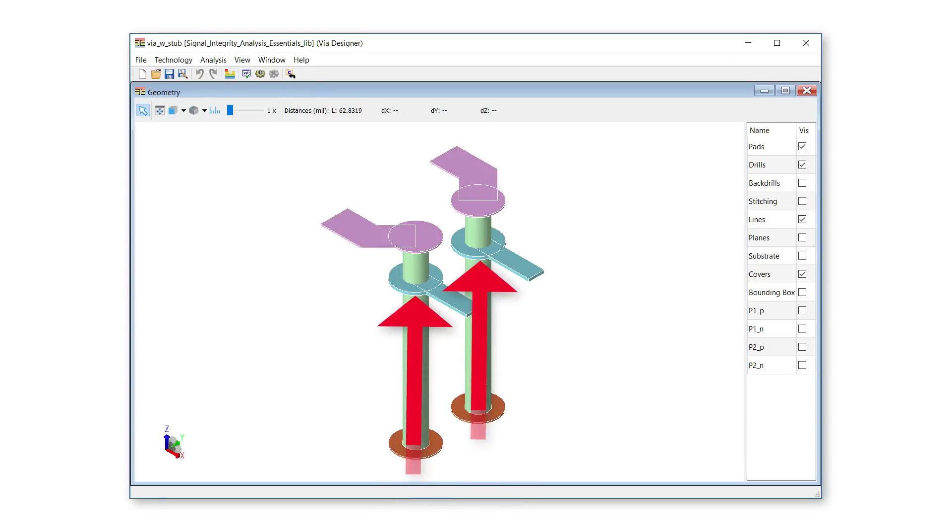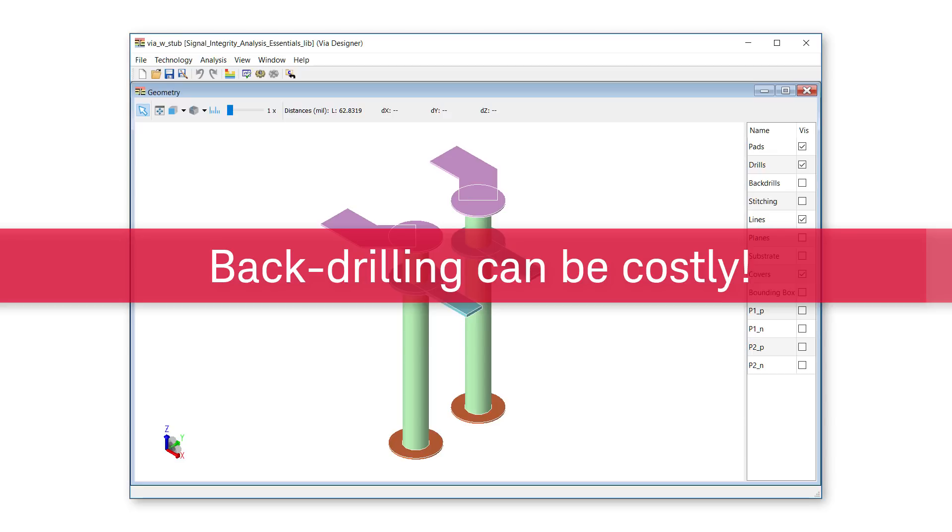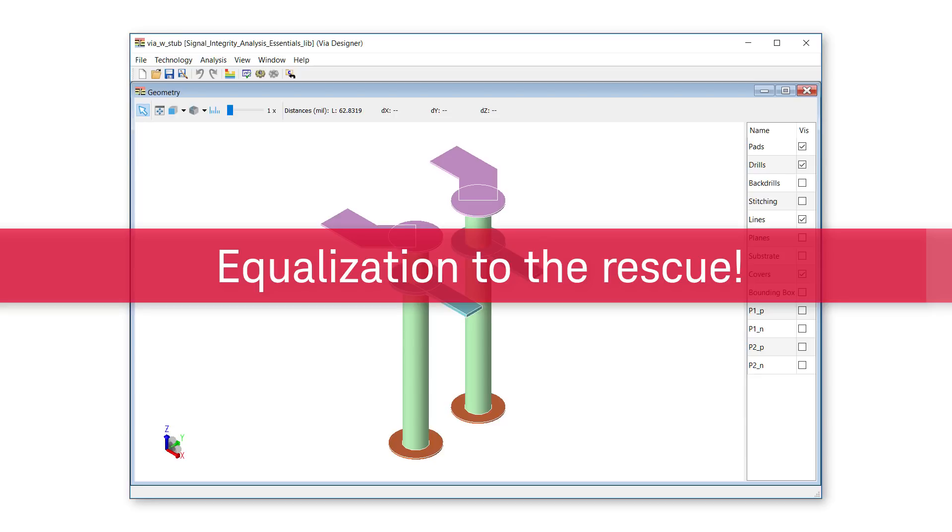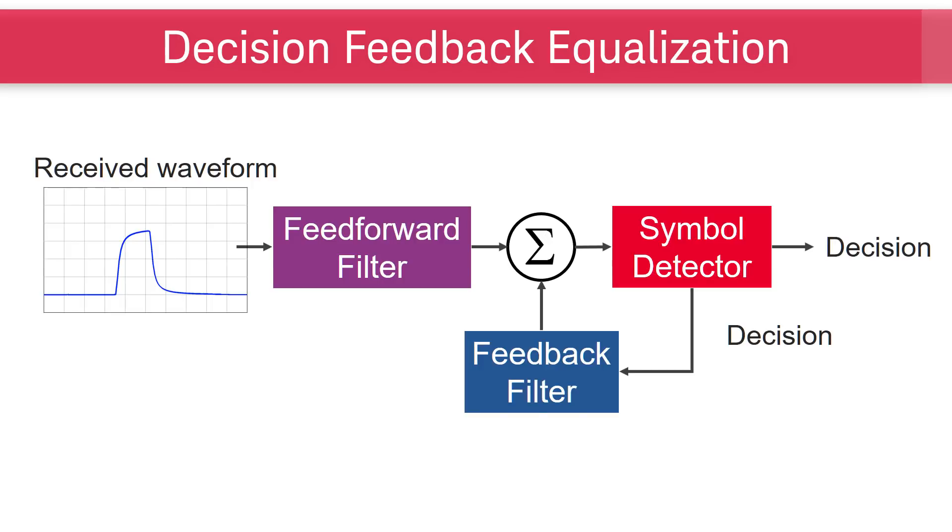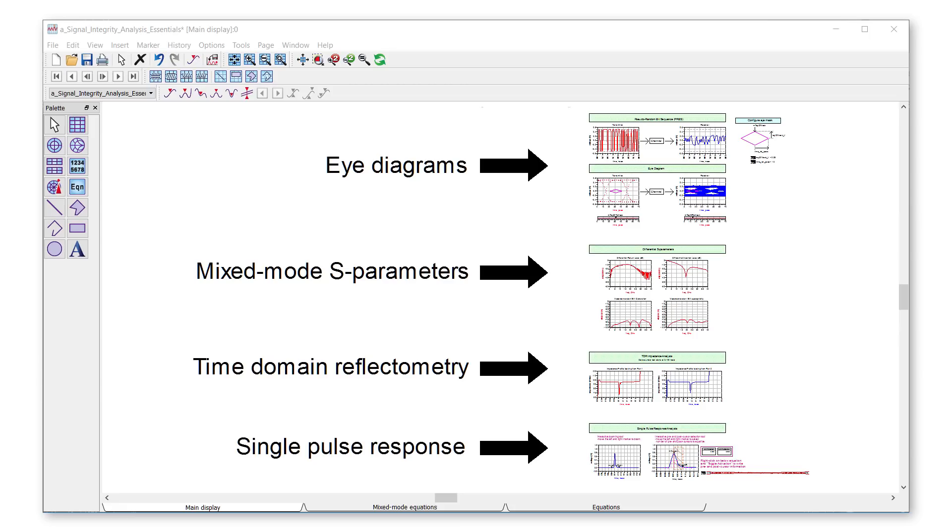Although it is possible to remove stubs in manufacturing, the cost to back drill can be high. When the stubs cannot be removed, equalization can help open the eye. In the time domain, decision feedback equalization uses digital signal processing to open the eye. To explore the equalization solution, we will use the single pulse response and the interactive cursor selection tool.